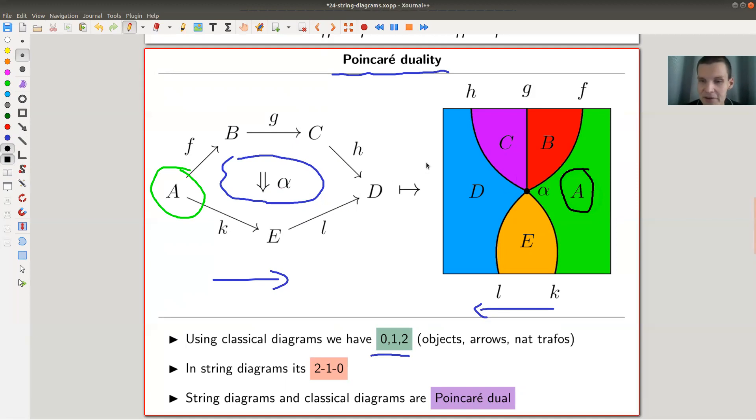A goes to here and it's now a face and the functors. So there's a functor and there's a functor, K and F and so on. It's just a Poincaré dual picture. So in string diagrams,